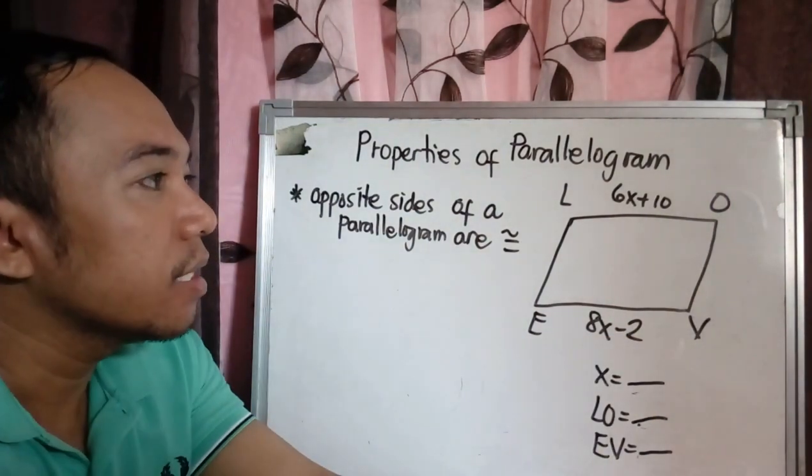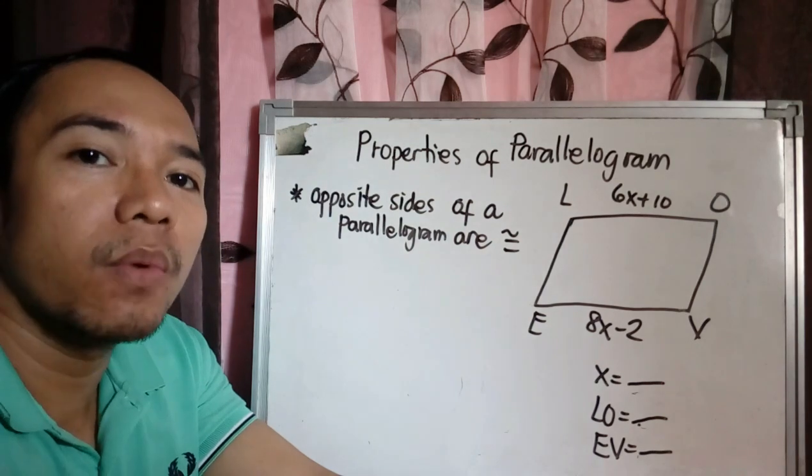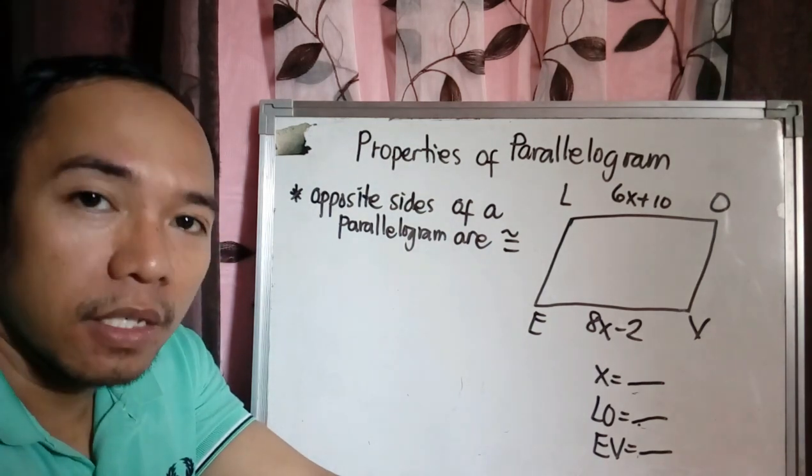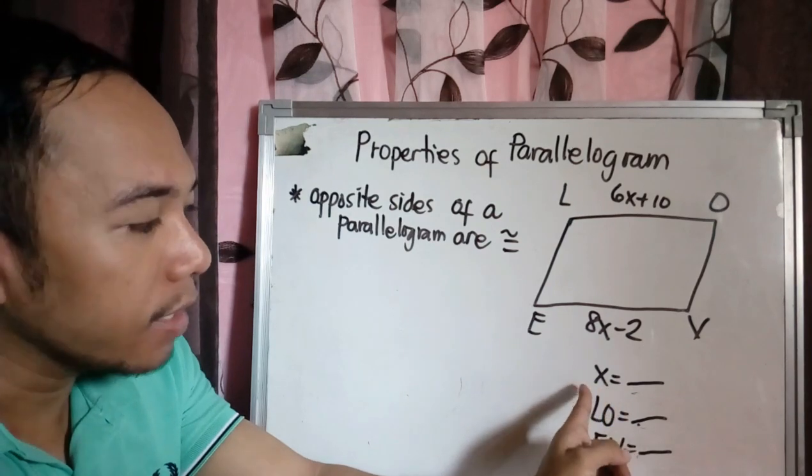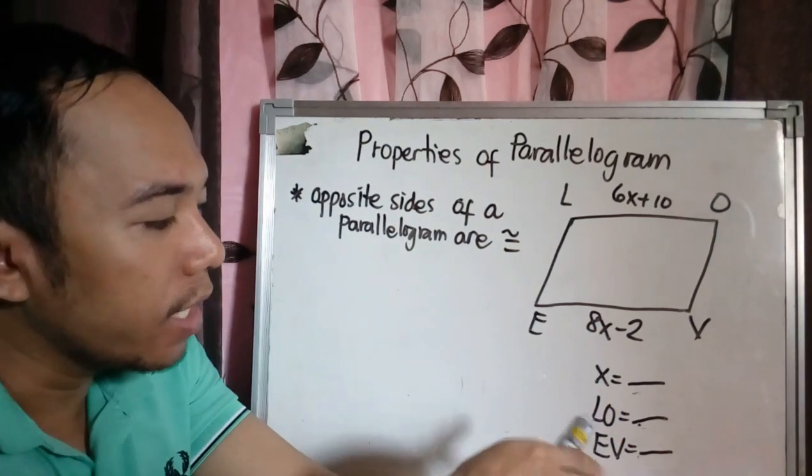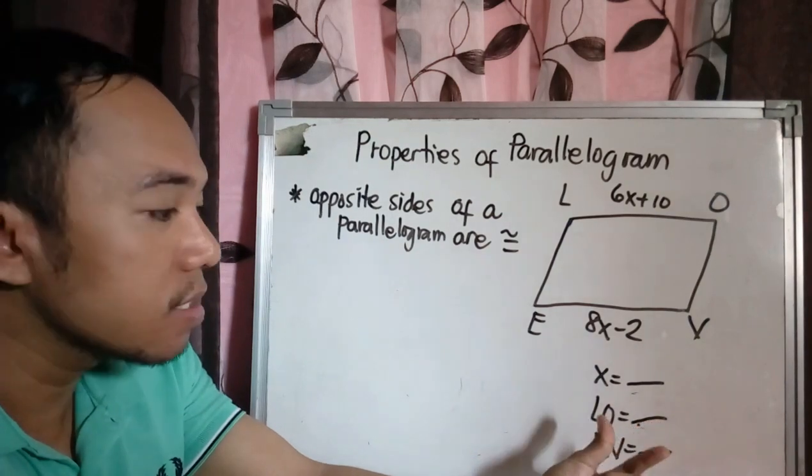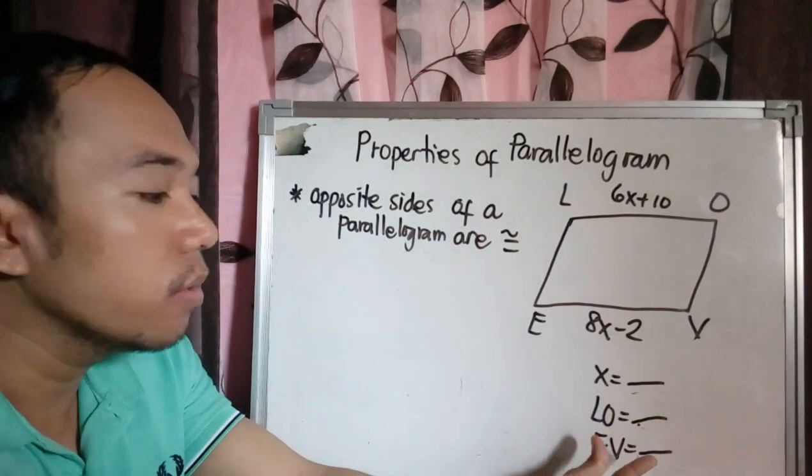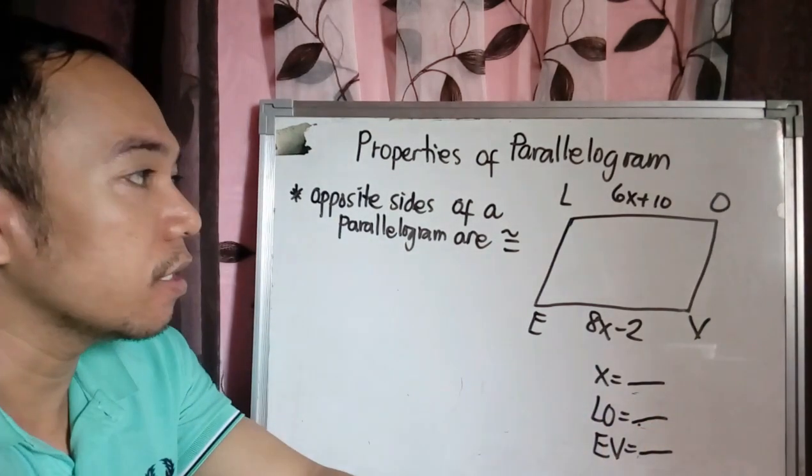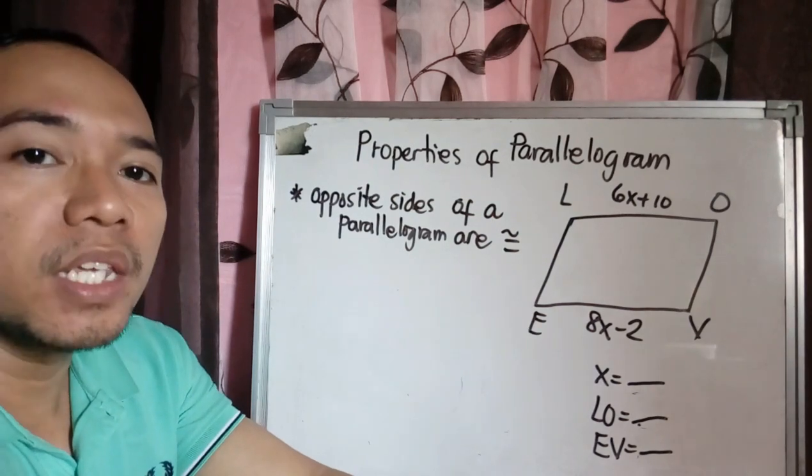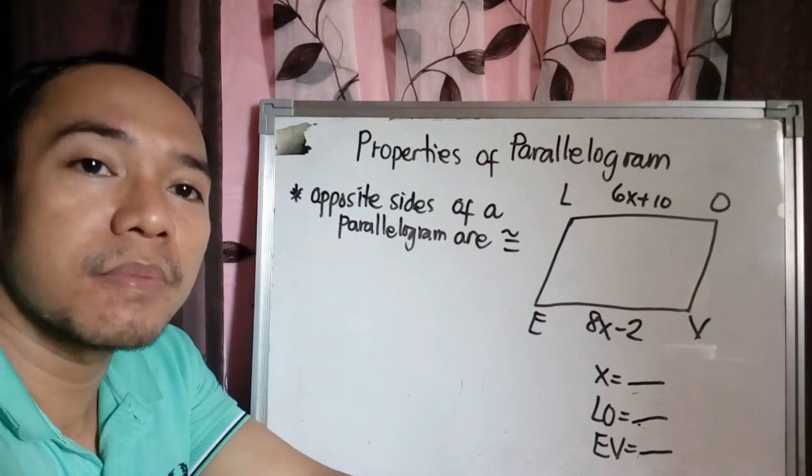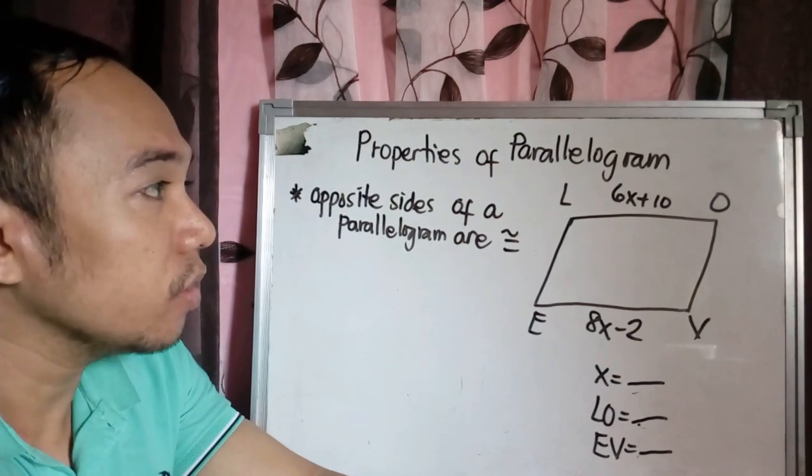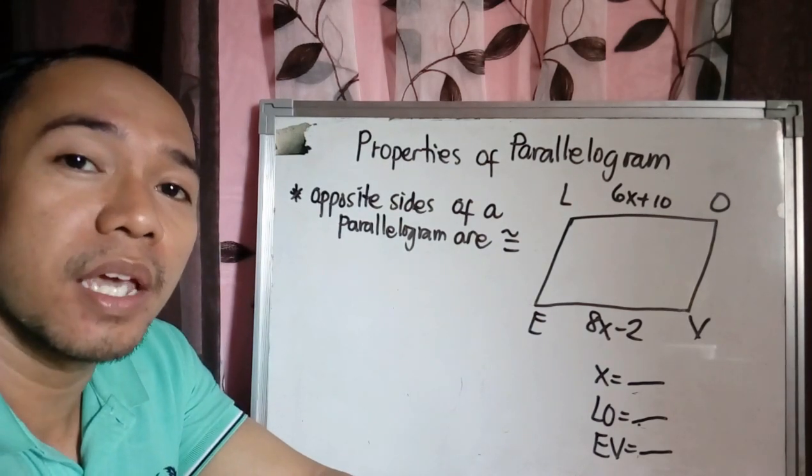It means that L-O is equal to E-V. So how are we going to solve for X, L-O, and E-V? The value of X, the measurement of L-O, and the measurement of E-V. First, we need to equate the two linear expressions or first degree expressions.